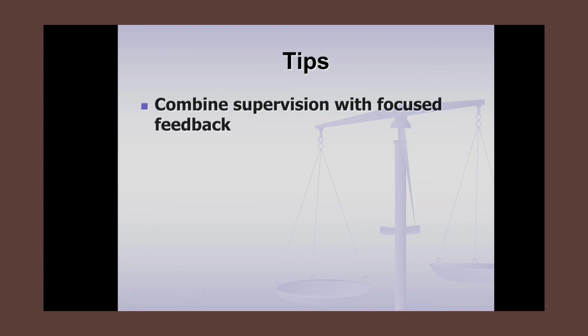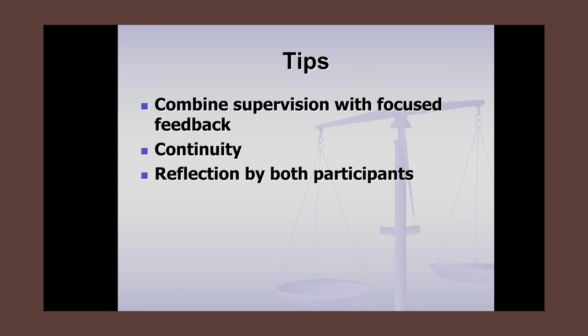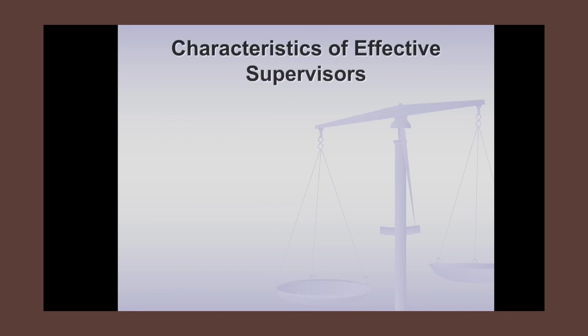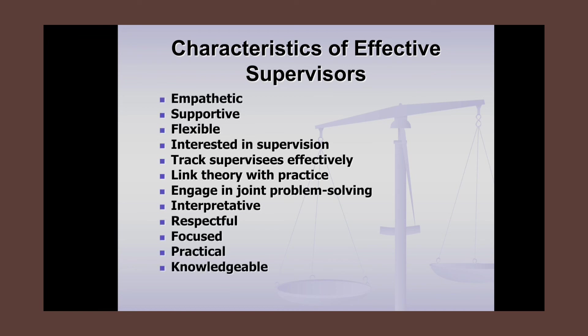Tips for effective supervision include combining supervision with focused feedback, ensuring continuity, and encouraging reflection by both supervisor and subordinate. Characteristics of effective supervisors include being empathetic, supportive, flexible, interested in supervision, tracking supervisees effectively, linking theory with practice, engaging in joint problem solving, and being interpretive, respectful, focused, practical, and knowledgeable.